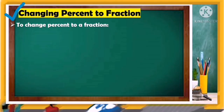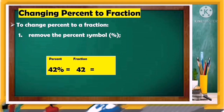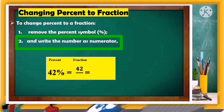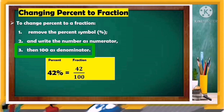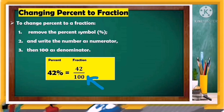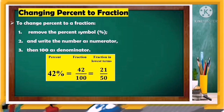First, let's change percent to fraction. To change percent to fraction, first remove the percent symbol. For example, 42 percent — remove the percent symbol so it becomes 42. Then write the number as the numerator, so use 42 as your numerator and 100 as the denominator. The fraction of 42 percent is 42 over 100.